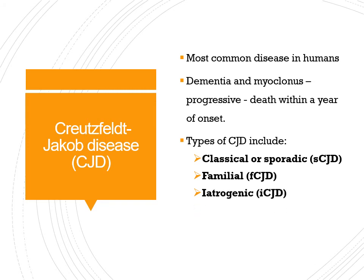Iatrogenic CJD is related to medical procedures — history of blood transfusion, organ transplantation, hormonal therapy such as gonadotropin hormone therapy, or corneal and meningeal transplants. Variant CJD is seen in younger age groups, typically under 30 years of age, in patients with a history of eating beef contaminated with prions.